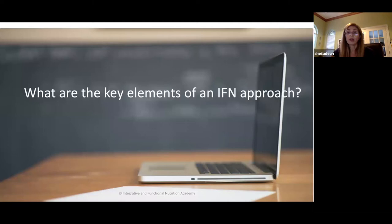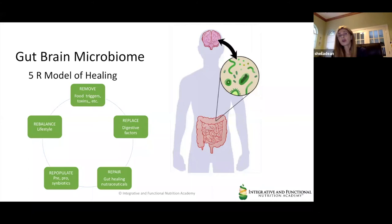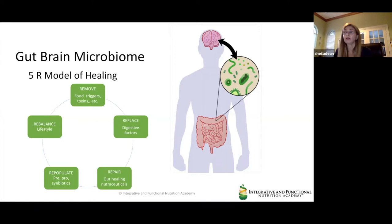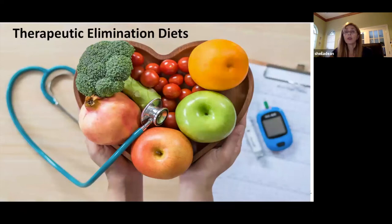The key elements of an integrative and functional nutrition approach include the gut-brain microbiome axis and connection, and learning how to implement the 5R model of healing — remove, replace, repair, repopulate, and rebalance — which ultimately impacts the gut immune system and brain chemical function. There are a number of studies available on the topic of the gut-brain microbiome for your review.